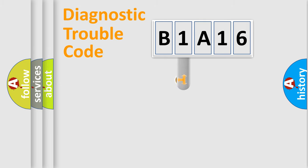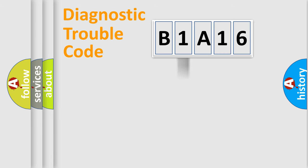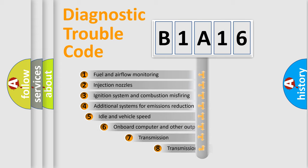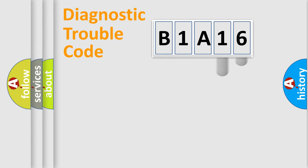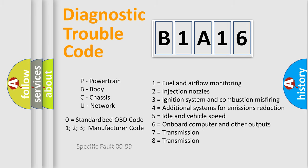This distribution is defined in the first character of the code. If the second character is expressed as zero, it is a standardized error. In the case of numbers 1, 2, or 3, it is a manufacturer-specific error. The third character specifies a subset of errors. This division is valid only if the second character is zero.